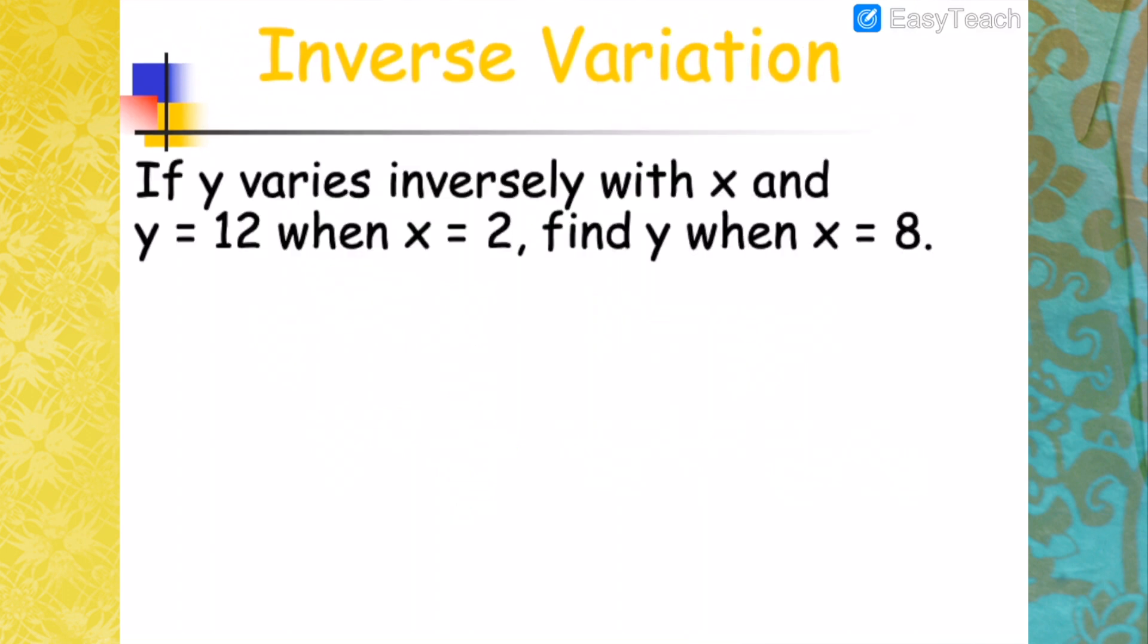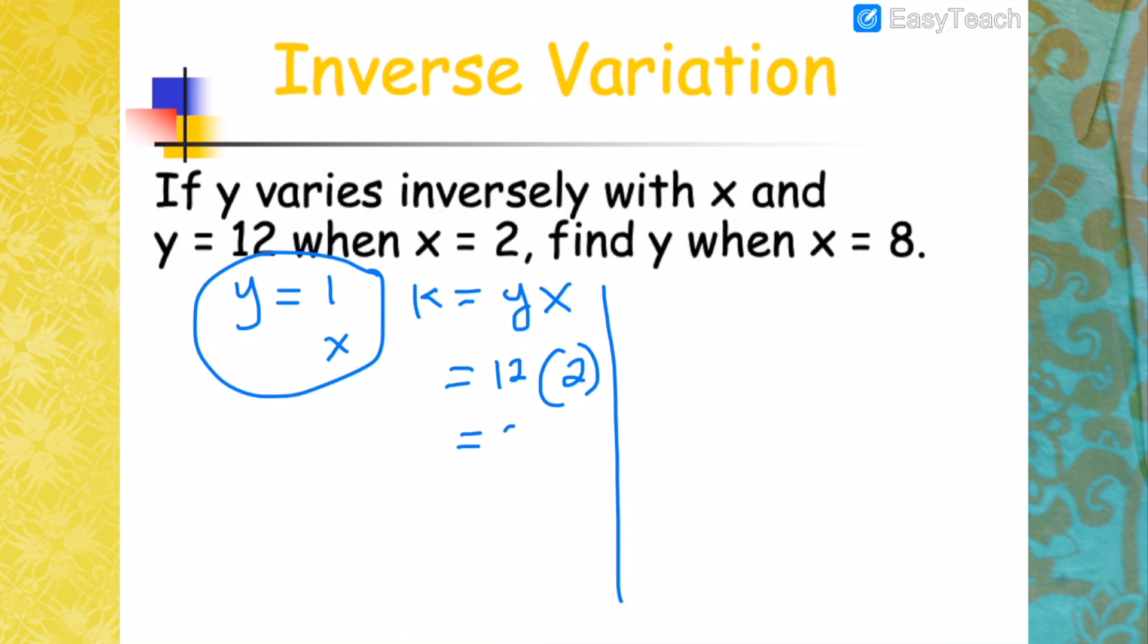Let's take a few examples. If Y varies inversely with X and Y is 12 when X is 2, find Y when X is 8. Again, I'll show you the two different ways to do it having the same answer. So the first one is you write Y equals K over X. Second step is to find the value of K. So K, rearranging this formula, will be Y times X. Y is 12 when X is 2. So multiplying that, you'll get 24. Find Y when X is 8.